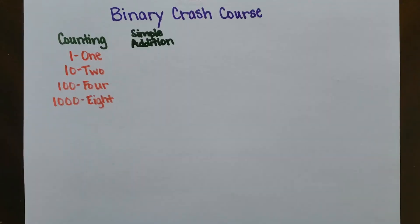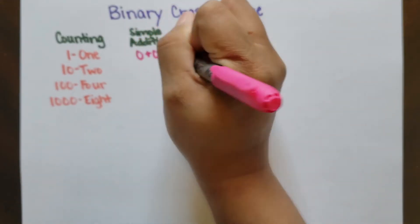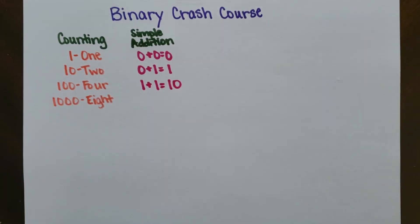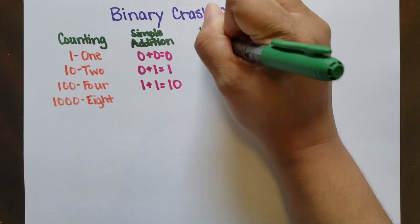What about addition? Well, there's really only three steps you ever perform when adding numbers in binary. 0 plus 0 is 0, 0 plus 1 is 1, and 1 plus 1 is 10, or 2. And by combining these, we can go ahead and add larger numbers.